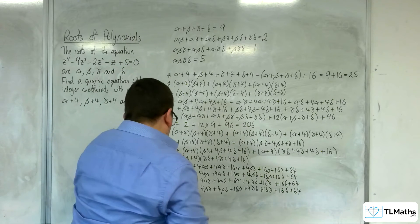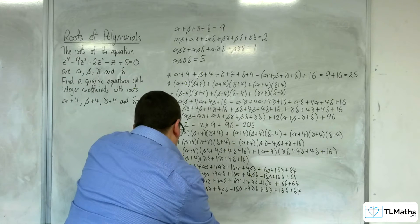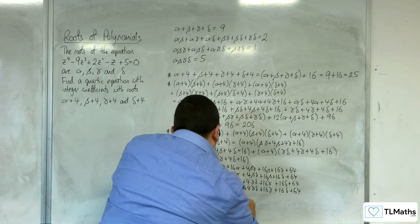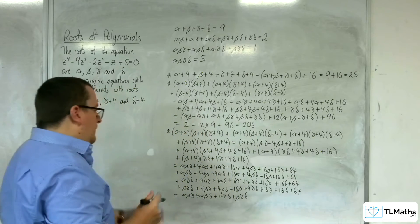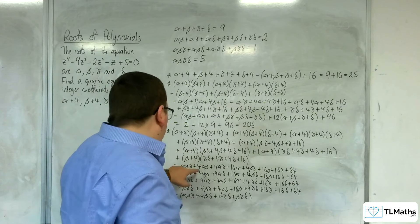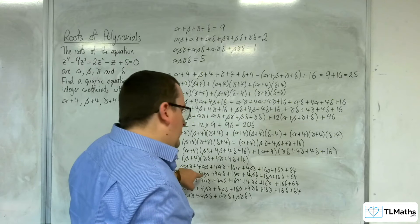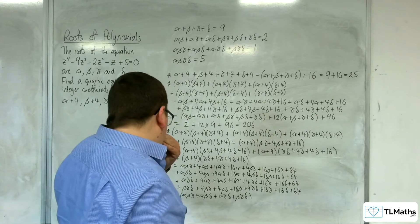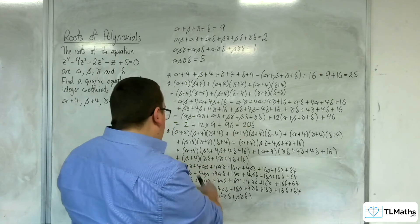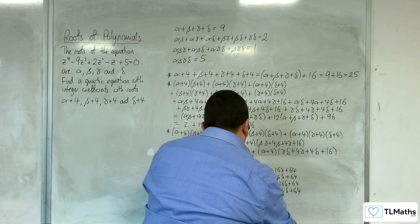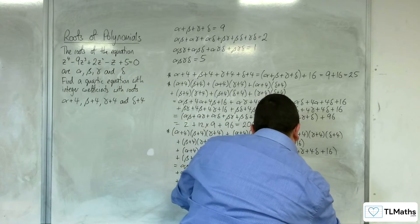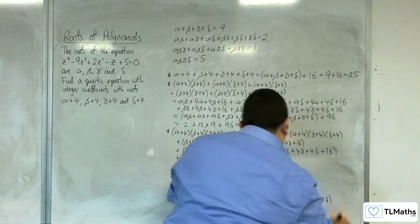Writing it out: alpha·beta·gamma + alpha·beta·delta + alpha·gamma·delta + beta·gamma·delta. Then we've got the pair products — alpha·beta appears twice, giving 8 lots of (alpha·beta + alpha·gamma + alpha·delta + beta·gamma + beta·delta + gamma·delta).